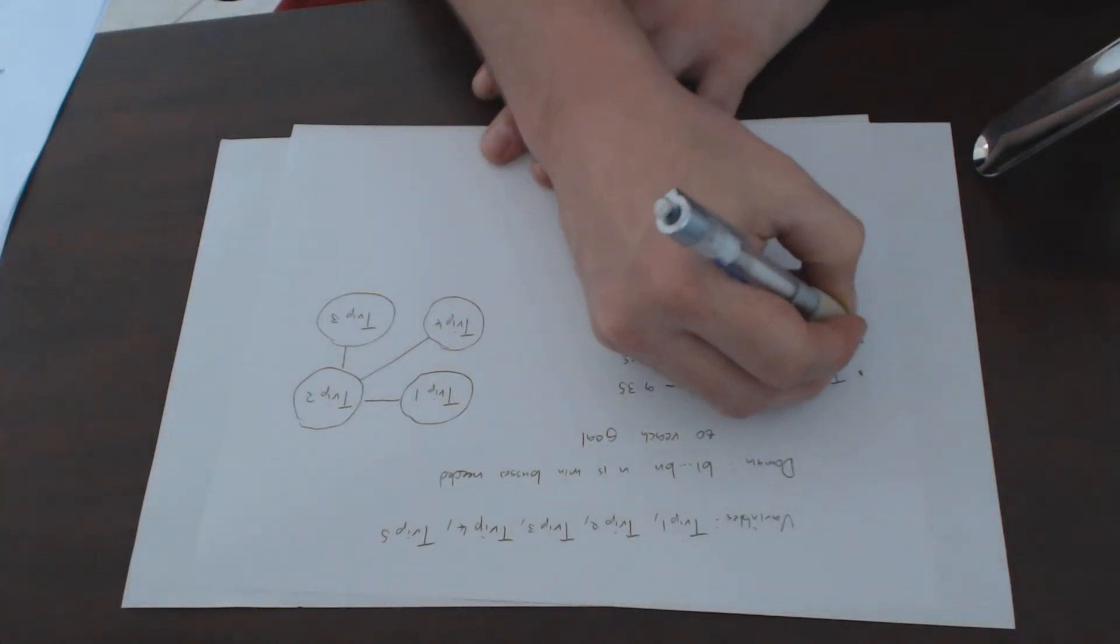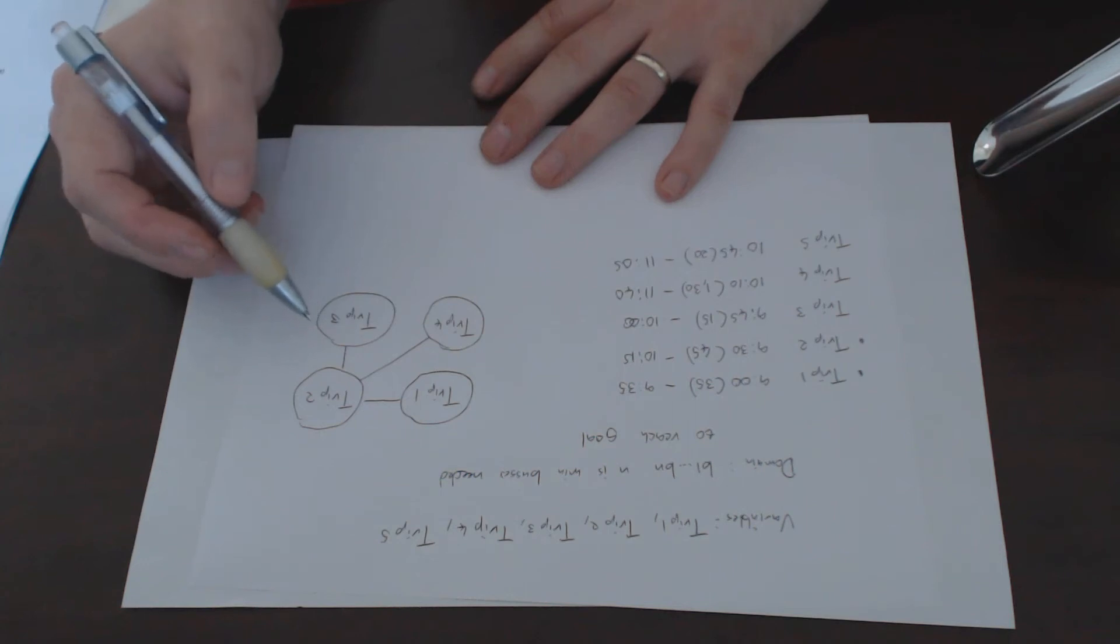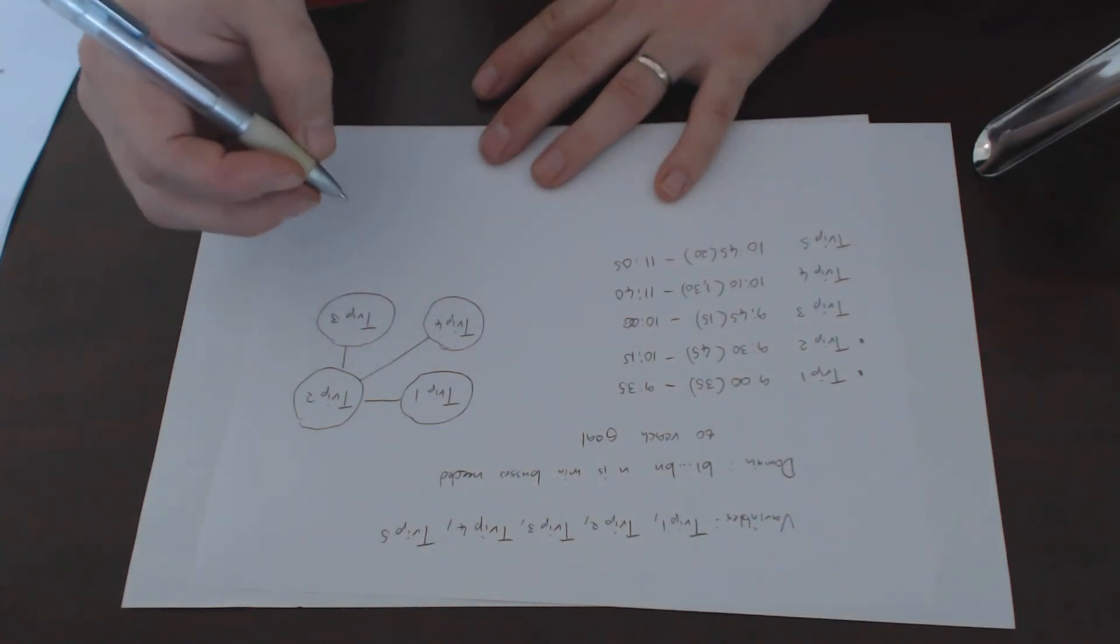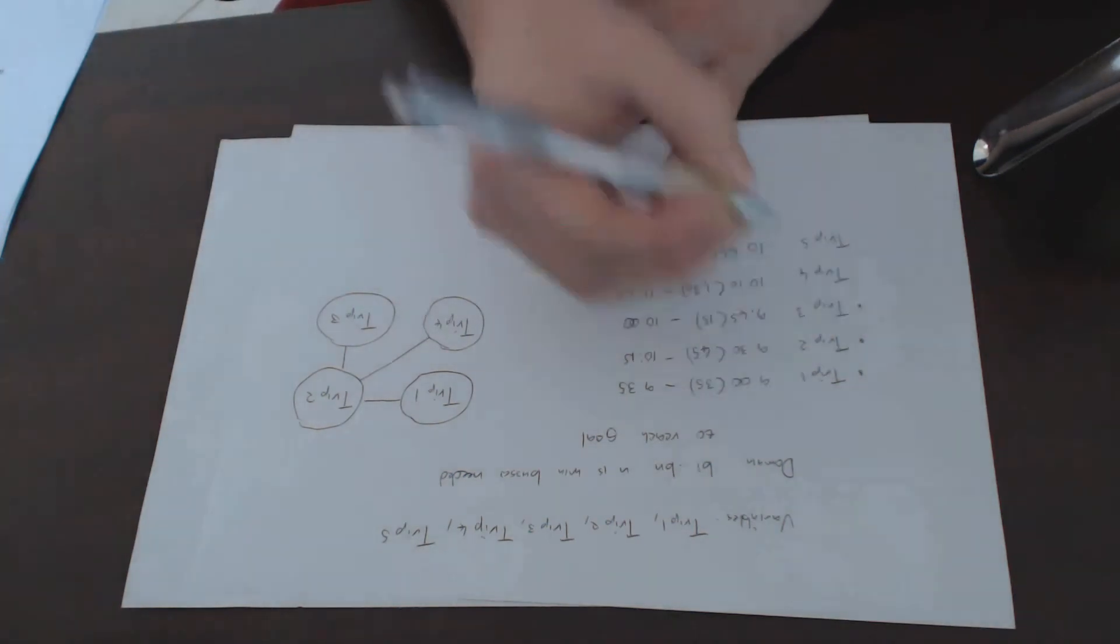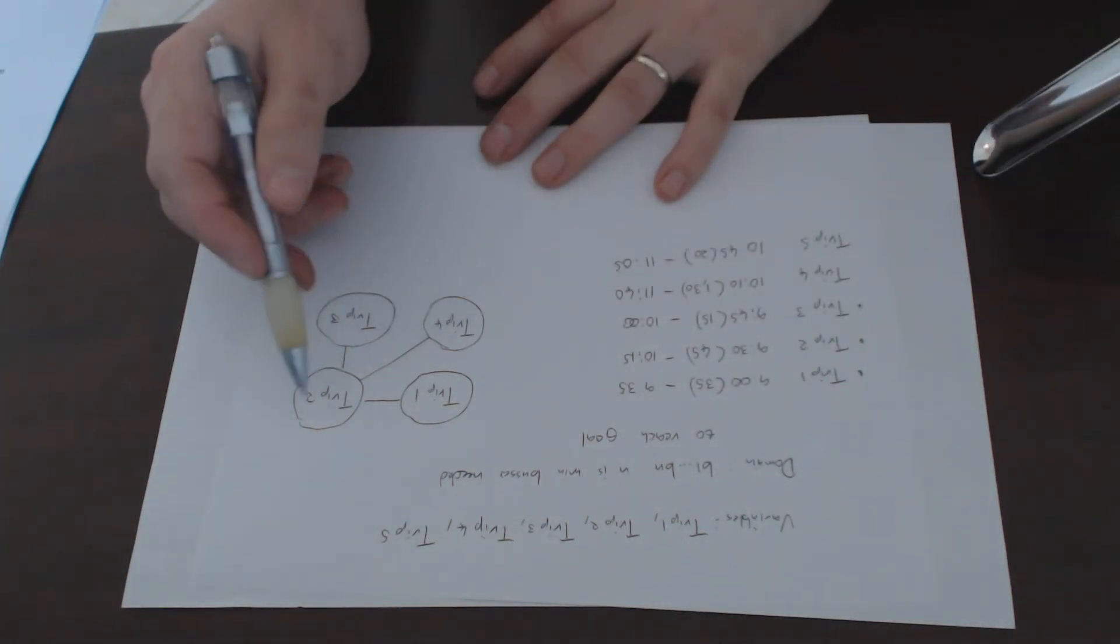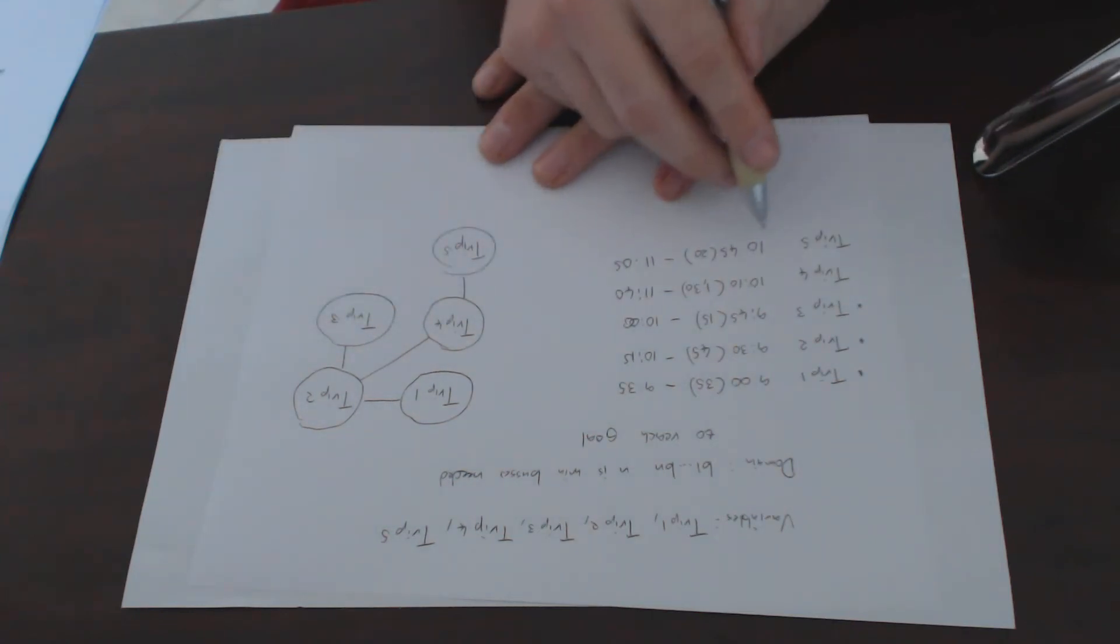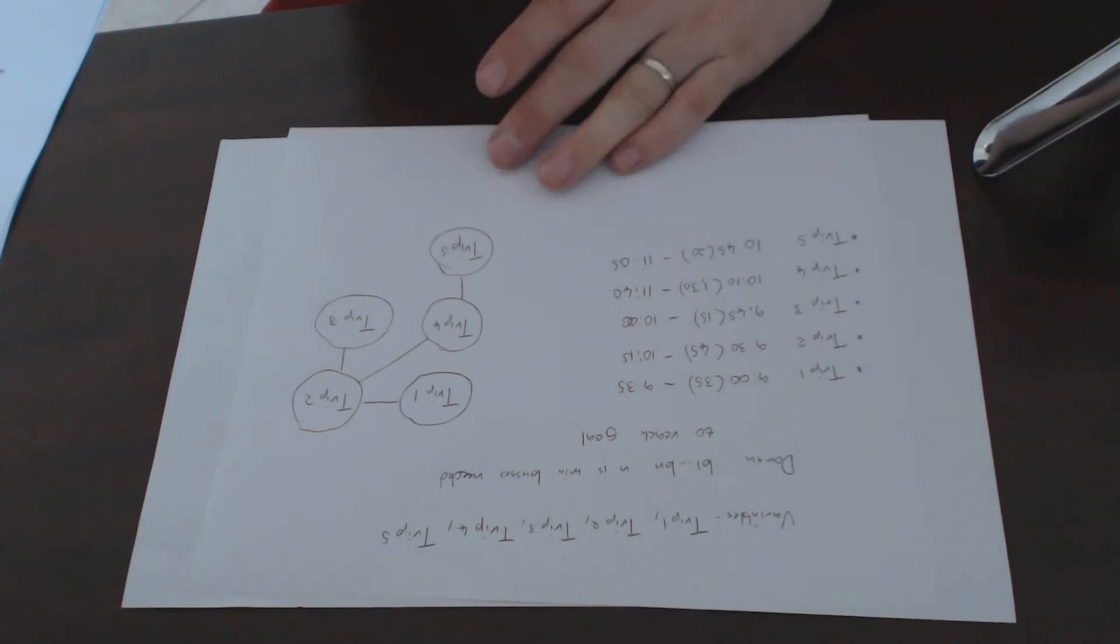Trip3: we've identified the constraint between trip2 and trip3. Nothing else is being affected because it arrives back at 10 and trip4 and trip5 are after 10 o'clock. For trip4 at 10:10, we've identified that constraint. There's also going to be a constraint on trip5 because trip4 is still away when trip5 needs to depart. Finally trip5, we've identified the constraints for that.